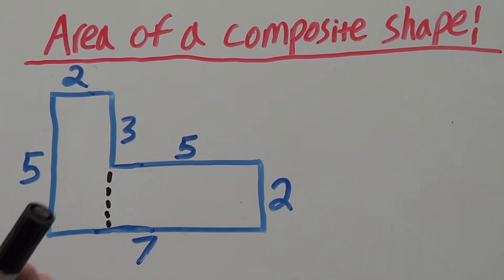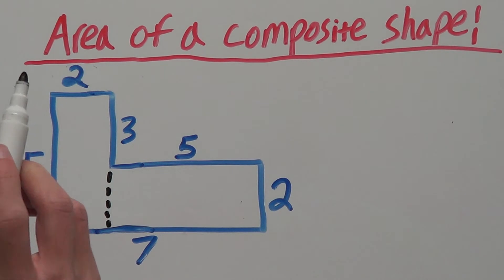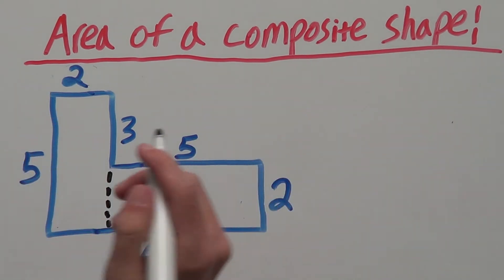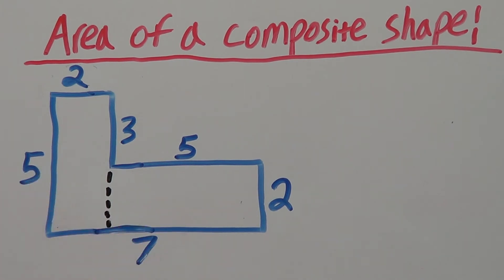And now that we have two rectangles which you hopefully know how to find the area of, we can individually find the area of each of these rectangles, and then add the two areas of each one together to get the total area of this composite shape. Let's see how we do this.